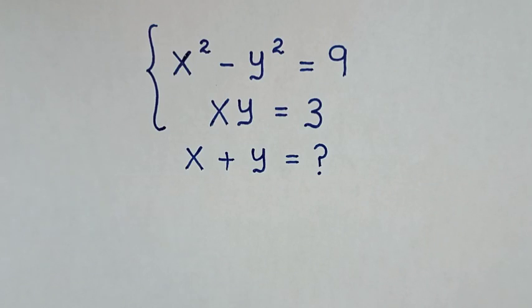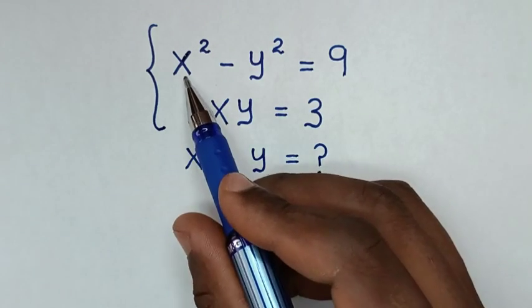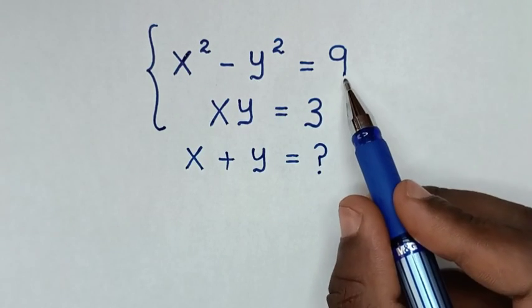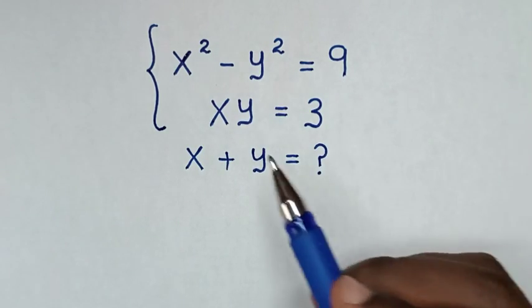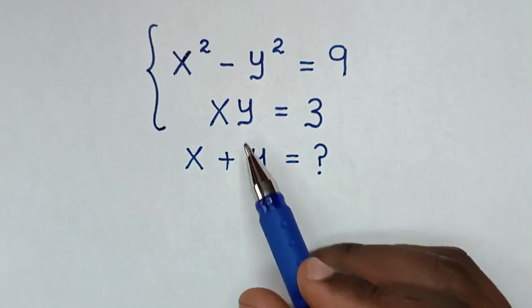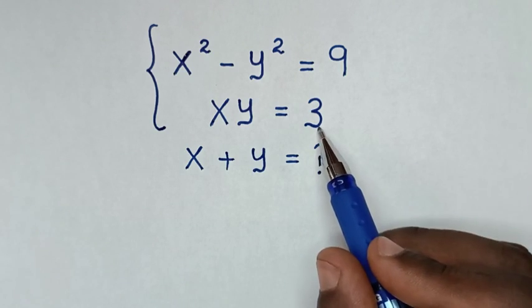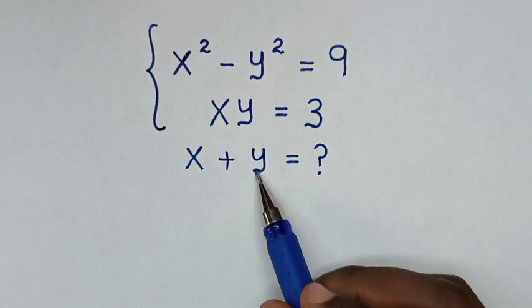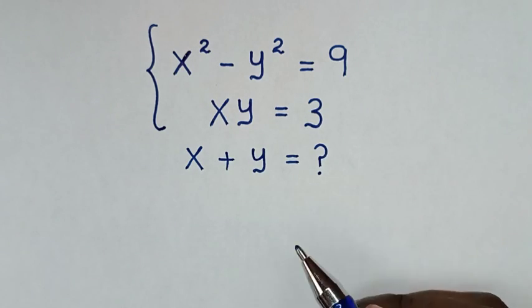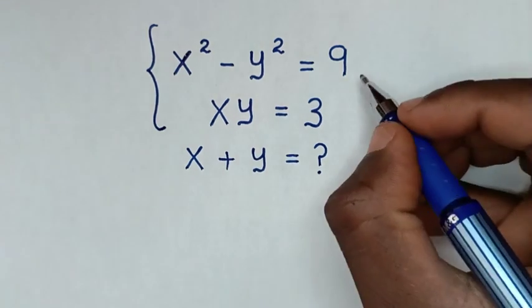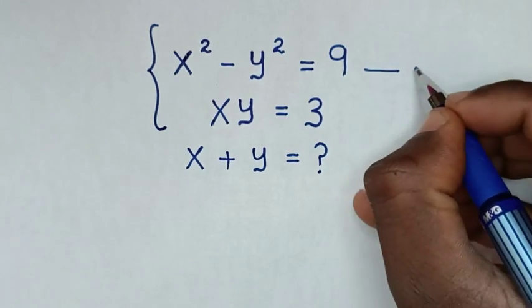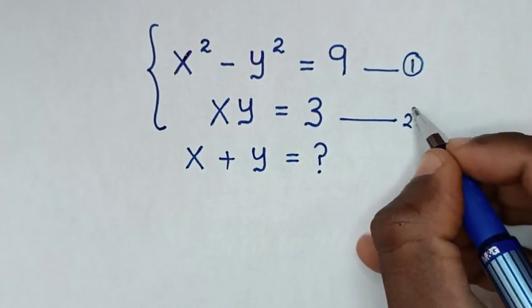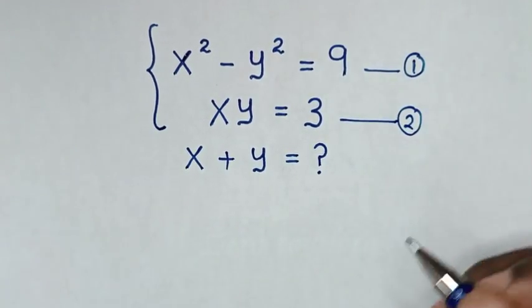Hello. How to solve x squared minus y squared is equal to 9, and x y is equal to 3, to find the value of x plus y. So first we let this equation 1, and this we let equation 2.